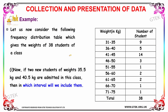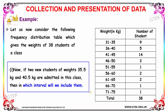Let's work through an example. Consider the frequency distribution table showing the weight of 38 students of a class. Two new students with weights 35.5 kg and 40.5 kg are admitted to this class. The question is: in which class interval will we include them?